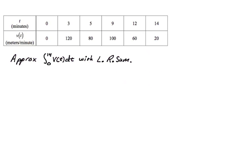In this video, we are going to find some Riemann sums and trapezoidal sums from tables of data. We have a table where t is measured in minutes and v of t is measured in meters per minute, and we want to approximate the integral from zero to 14 of v of t dt with a left Riemann sum.